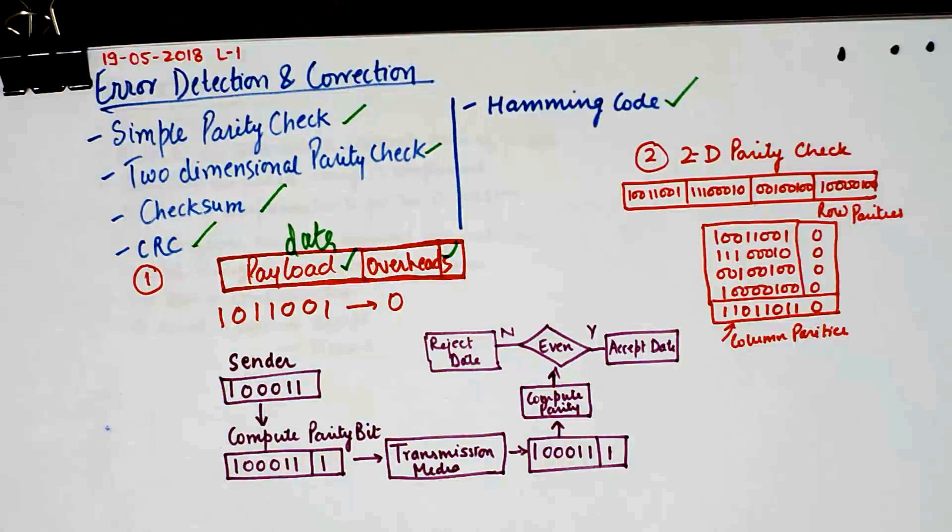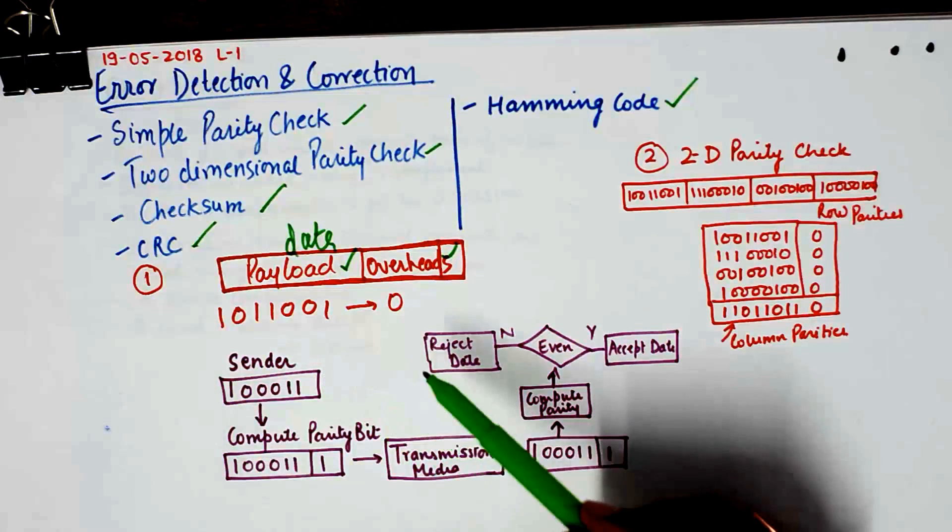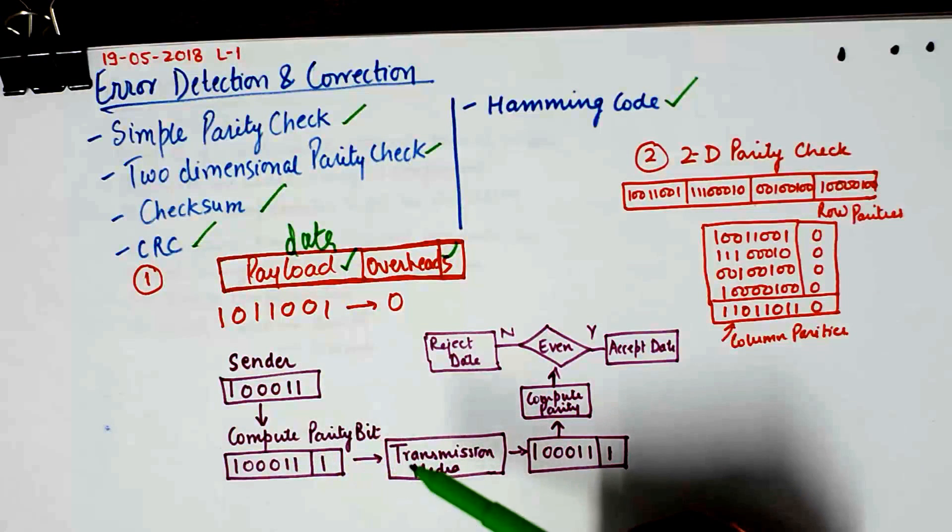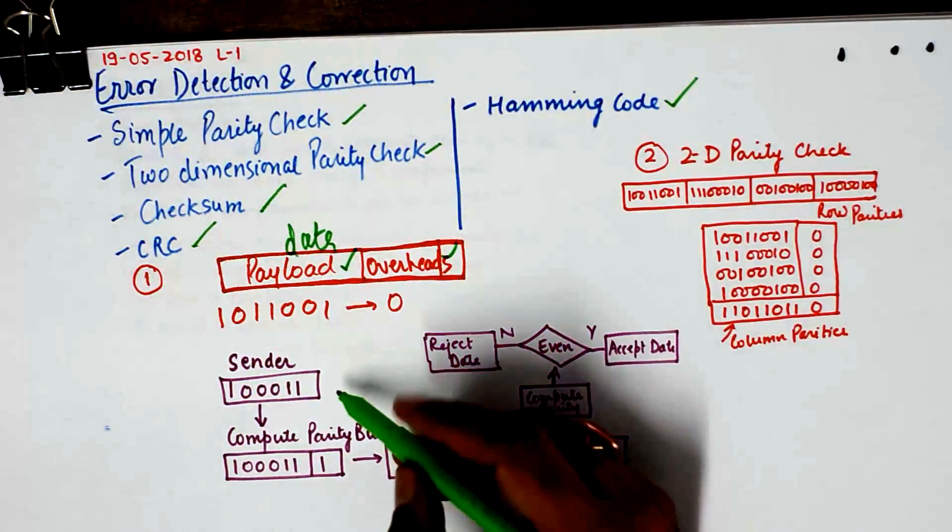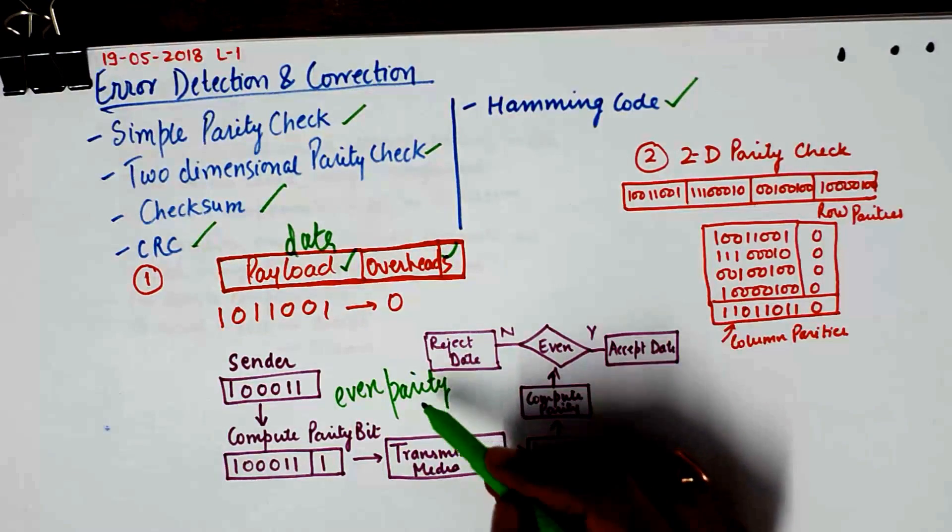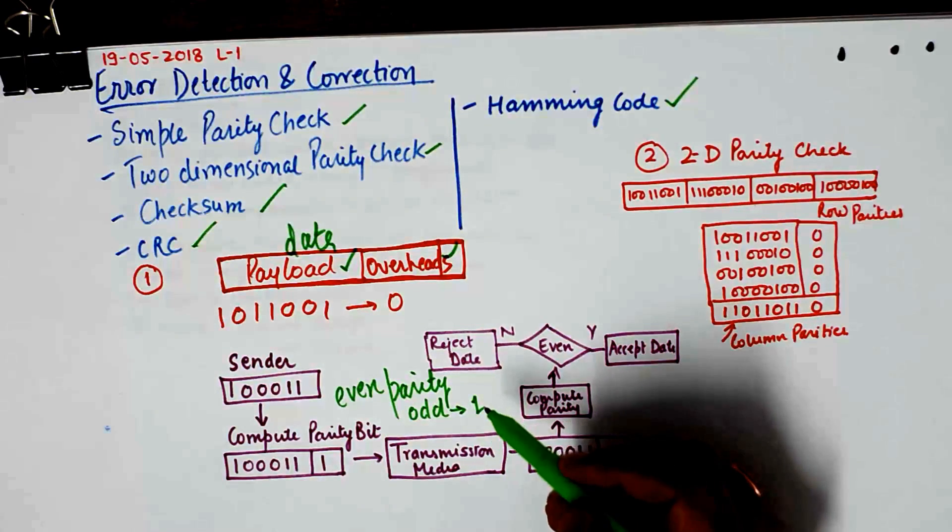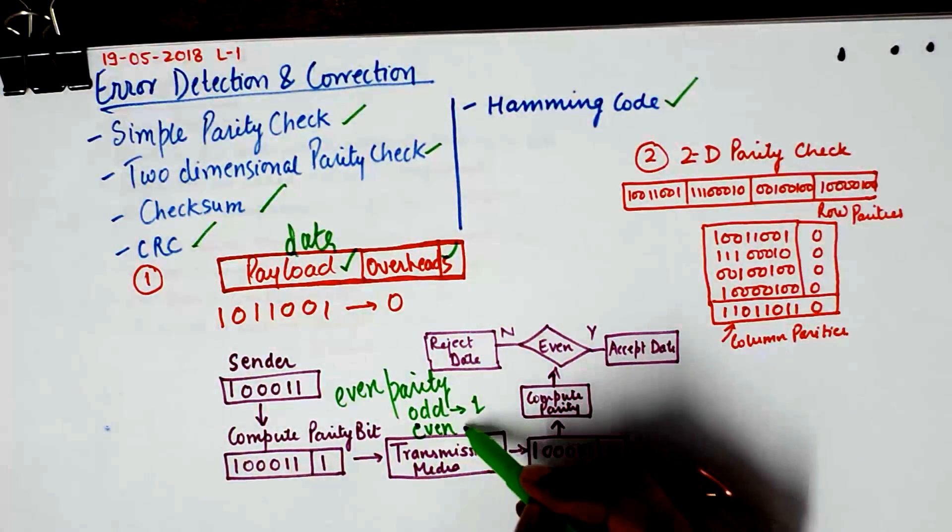For example, we are checking out simple parity check. What it does is, this is by the way the algorithm of simple parity check. A sender sends some data, then the algorithm computes the parity. If we are using an even parity here, for even parity what it does is, if the number of ones are odd, it will attach a one as a parity bit. If the number of ones are even, it will attach a zero.